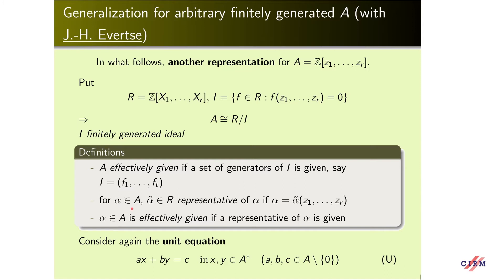For an element alpha of A, we denote by alpha-tilde a representative of alpha, if alpha equals alpha-tilde(Z₁,...,Z_r). Of course, every element has infinitely many representatives, and we say that alpha is given effectively if we have a representative of alpha.